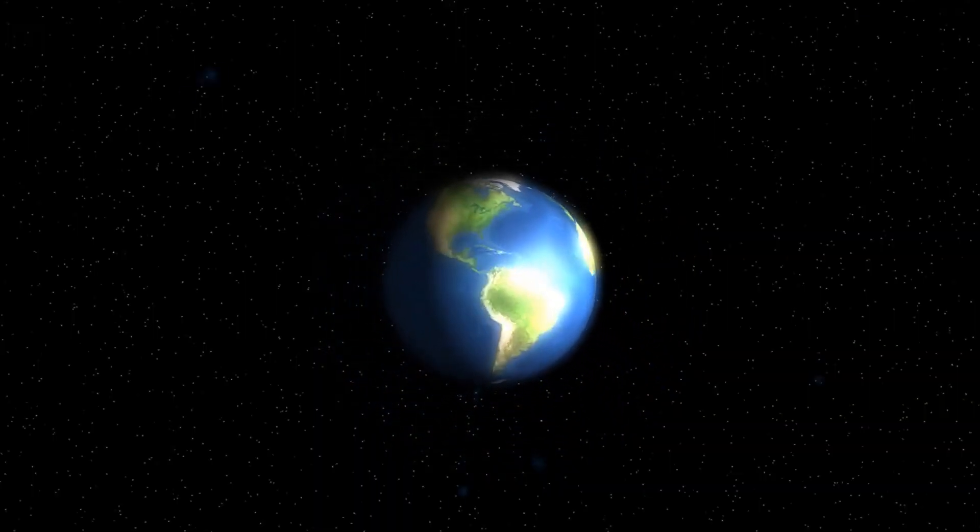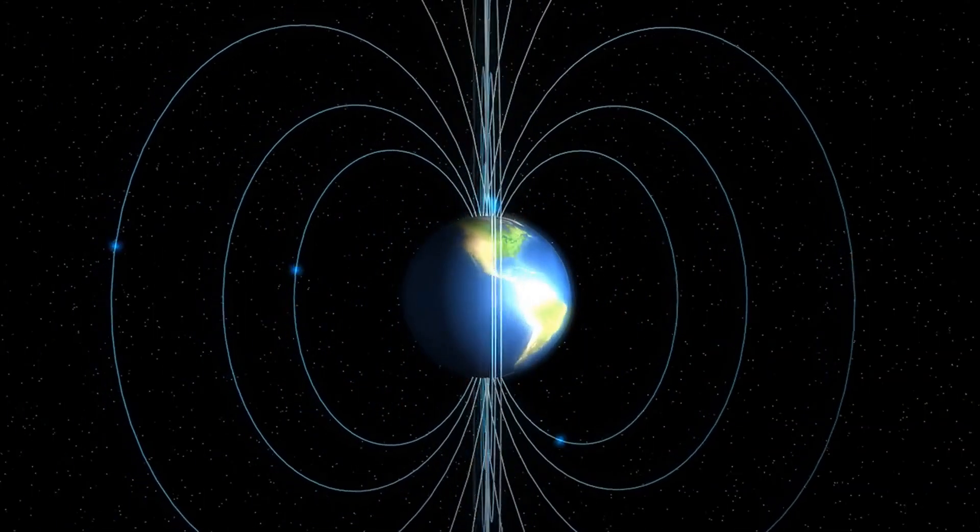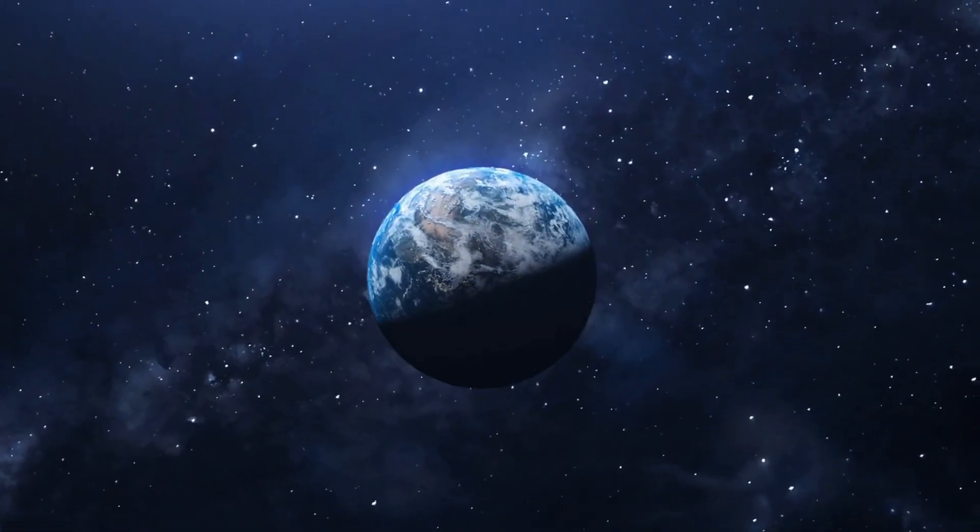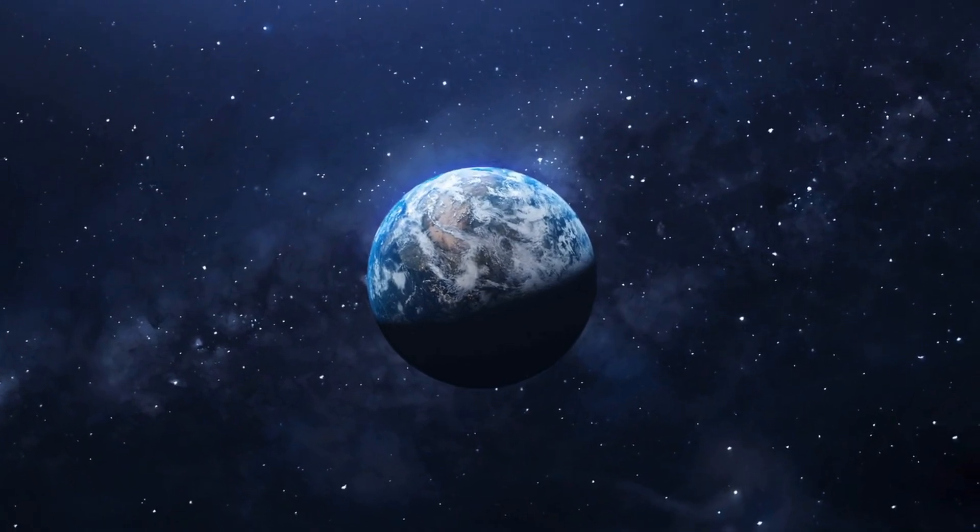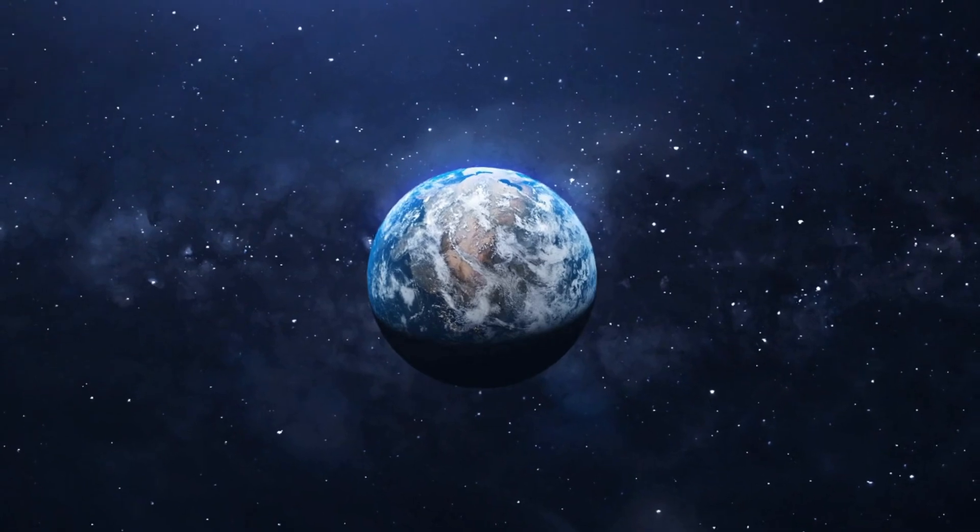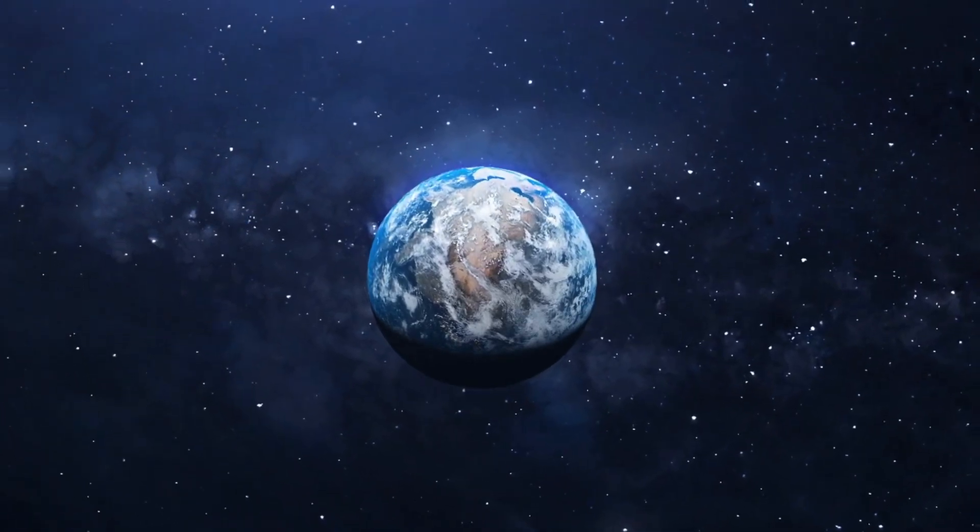The Earth's magnetic field is like a shield that protects us from the solar wind. During the equinoxes, the Earth's magnetic field is tilted relative to the Sun, which can cause cracks to form in the field, allowing the solar wind particles to enter the Earth's atmosphere and create the Northern Lights.